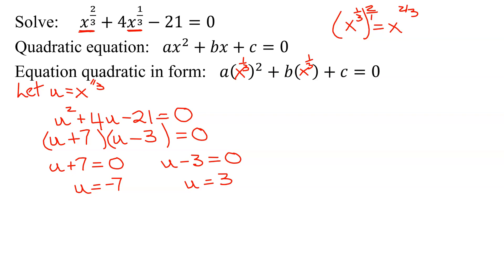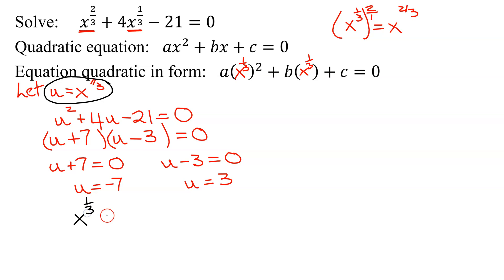Be careful — you can't stop here. You've found u, but the problem wants to know what x is. So you have to substitute back in what x equals for u. Instead of u, you're going to have x to the one-third equals negative 7, and x to the one-third equals positive 3.